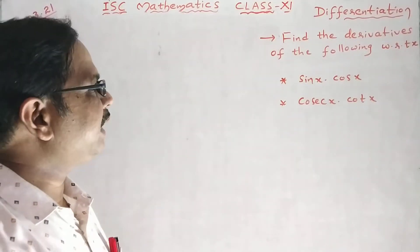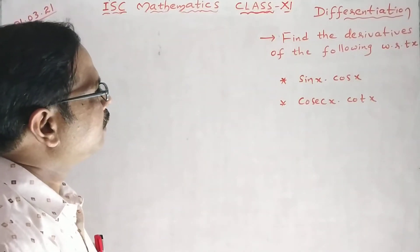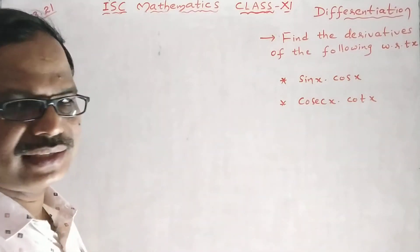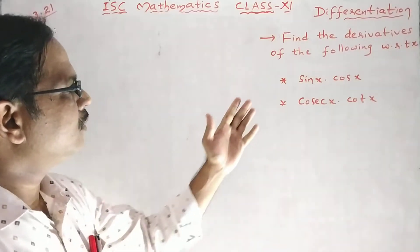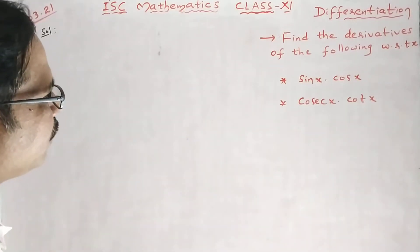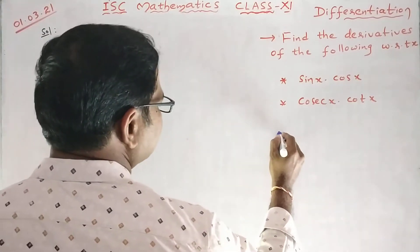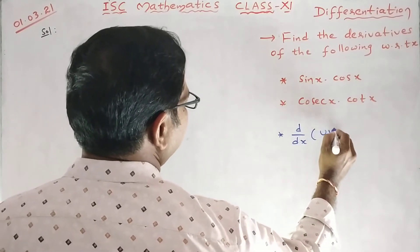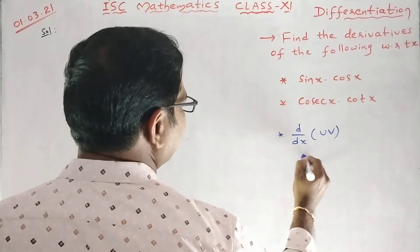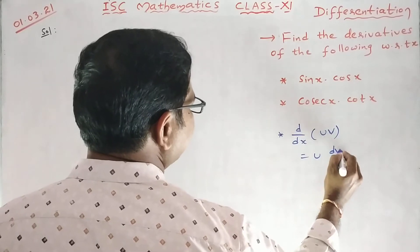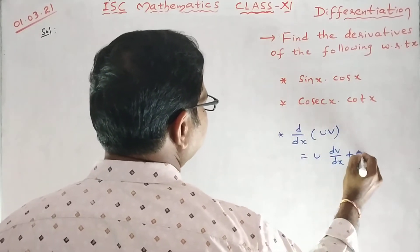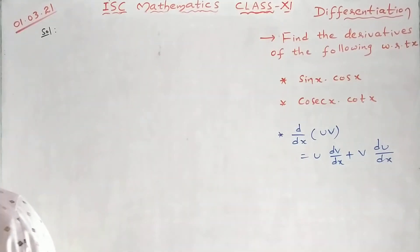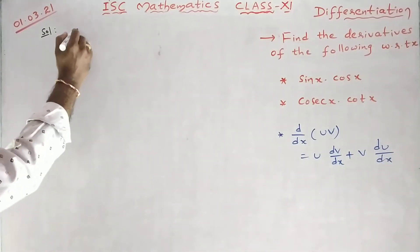Hi students, good evening everybody. In differentiation, let us continue the problems of exercise 13.5. Find the derivatives of the following with respect to x. We have one formula here — the product rule, the UV formula: first function into derivative of second function, plus second function into derivative of first function.